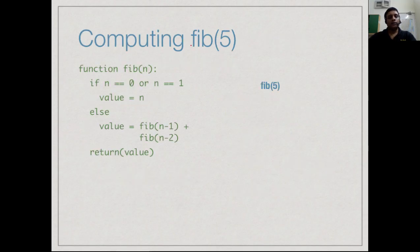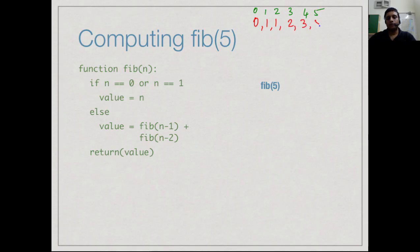Let's see how this works on a small input. We just saw that Fibonacci of 5 is 5. Starting from arguments 0, 1, 2, 3, 4, 5, the corresponding values are 0, 1, 1, 2, 3, and then 5. So we are trying to compute this fifth Fibonacci number, which we computed very fast by hand.